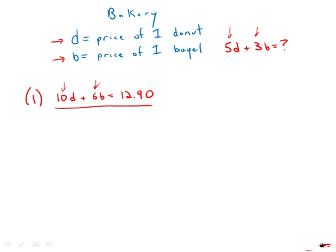In other words, if we just take this entire equation and divide it by two, what we get is 5D plus 3B equals $6.45. That is the price that answers the prompt.